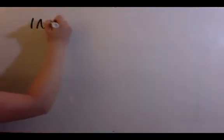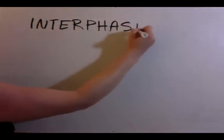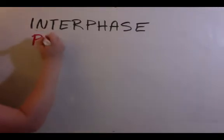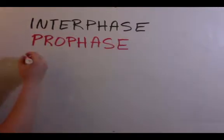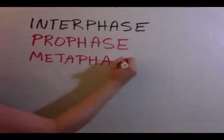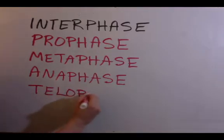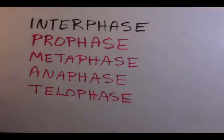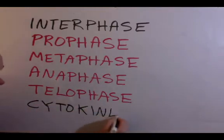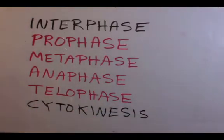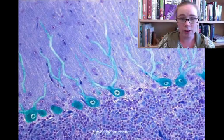Mitosis is the process that all cells use to duplicate themselves. Interphase is the pre-mitotic phase that all cells spend most of their time in. Mitosis begins with prophase, then continues to metaphase, then anaphase, and finishes in telophase. After mitosis has completed, the cell performs cytokinesis, where it splits into two daughter cells.